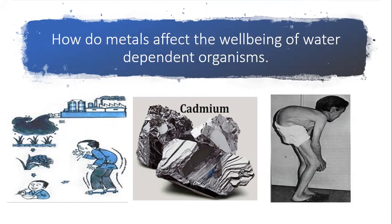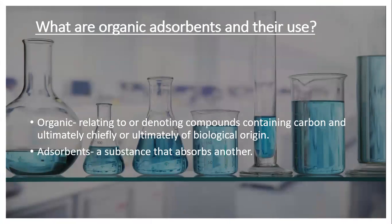To avoid the aforementioned health issues, organic absorbents are used to extract the metals. To better understand what organic absorbents are, we break down the word to 'organic,' which is a substance relating to or denoting compounds containing carbon and ultimately of biological origin, and 'absorbent,' which is a material that allows liquid, gas, or dissolved solids to adhere to its surface. Most of these absorbents work by using a combination of physical and chemical forces to extract contaminants.